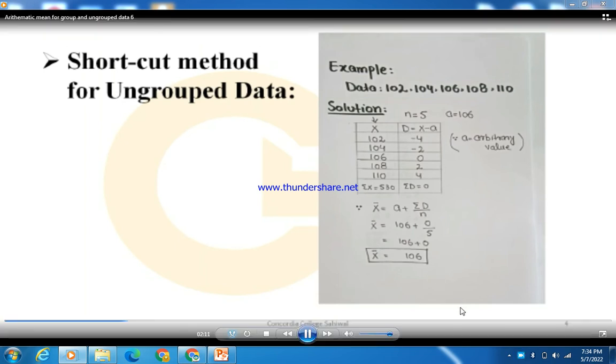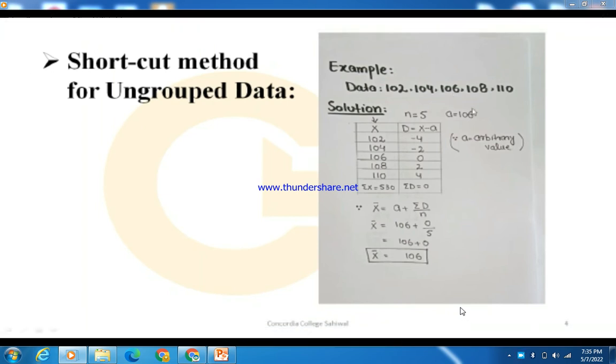For example, 102 minus 106 equals negative 4. 104 minus 106 equals negative 2. 106 minus 106 equals 0. 108 minus 106 equals positive 2, and 110 minus 106 equals positive 4.